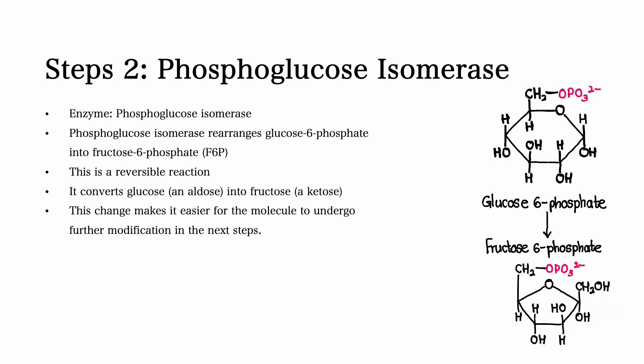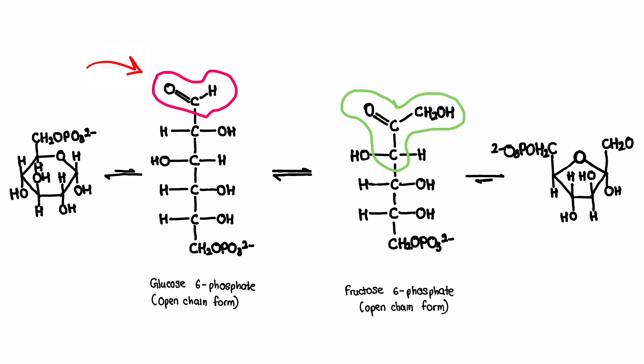Step number two. In this step, phosphoglucose isomerase is the enzyme that is involved. Phosphoglucose isomerase rearranges glucose 6-phosphate into fructose 6-phosphate, also known as F6P. This is a reversible reaction. This reversible reaction converts glucose, which is an aldose, to fructose, which is a ketose. This change makes it easier for the molecule to undergo further modification in the following steps.